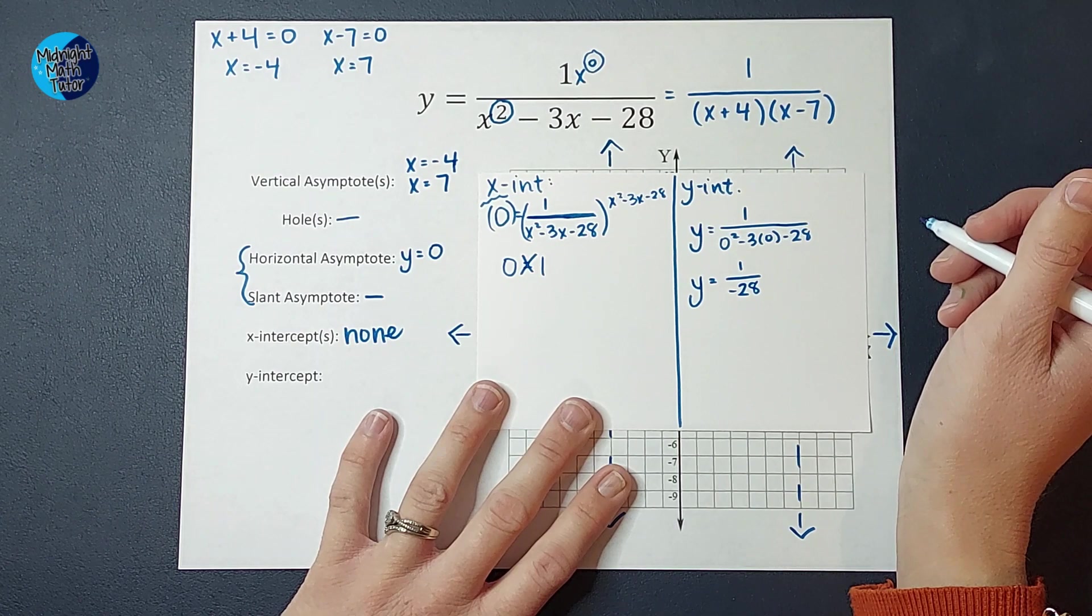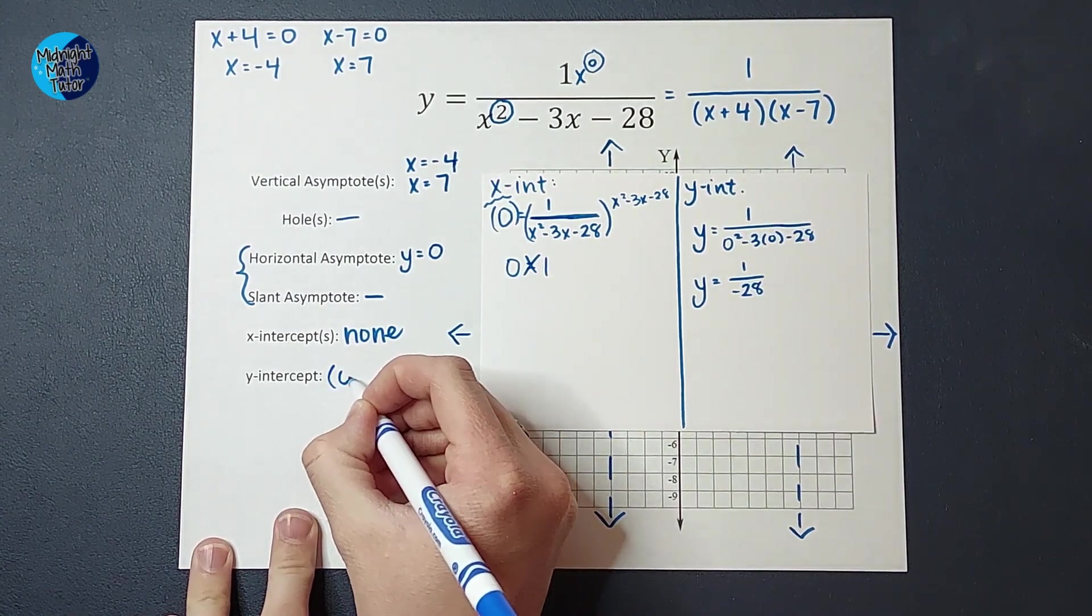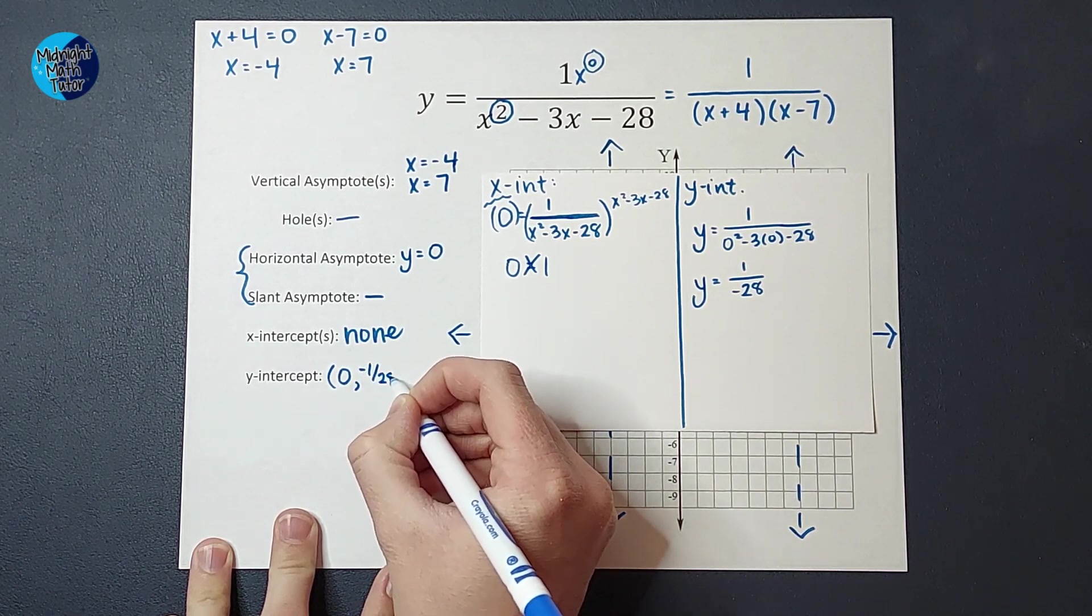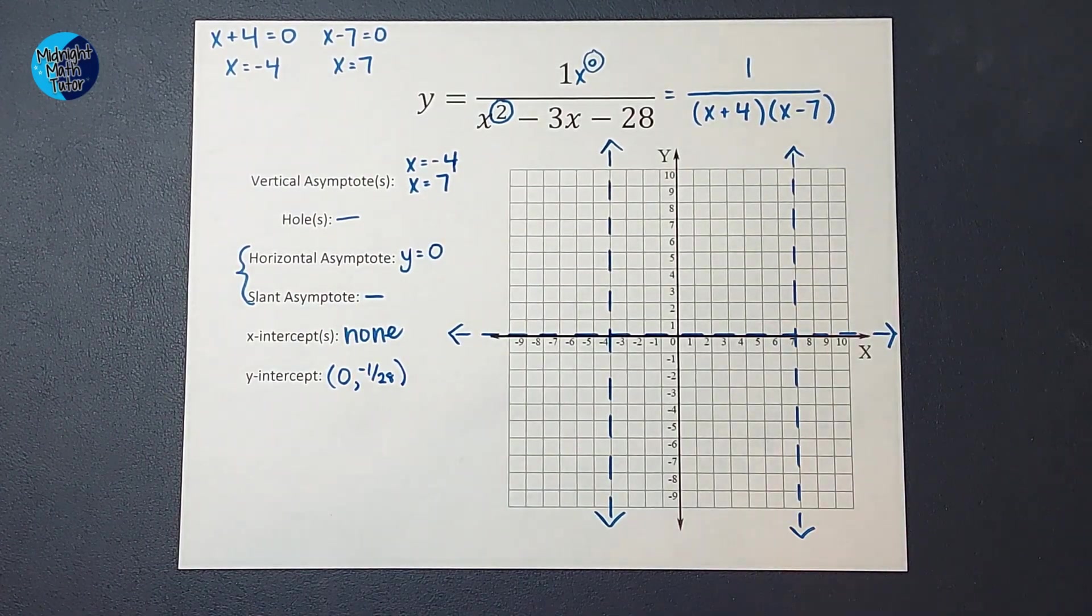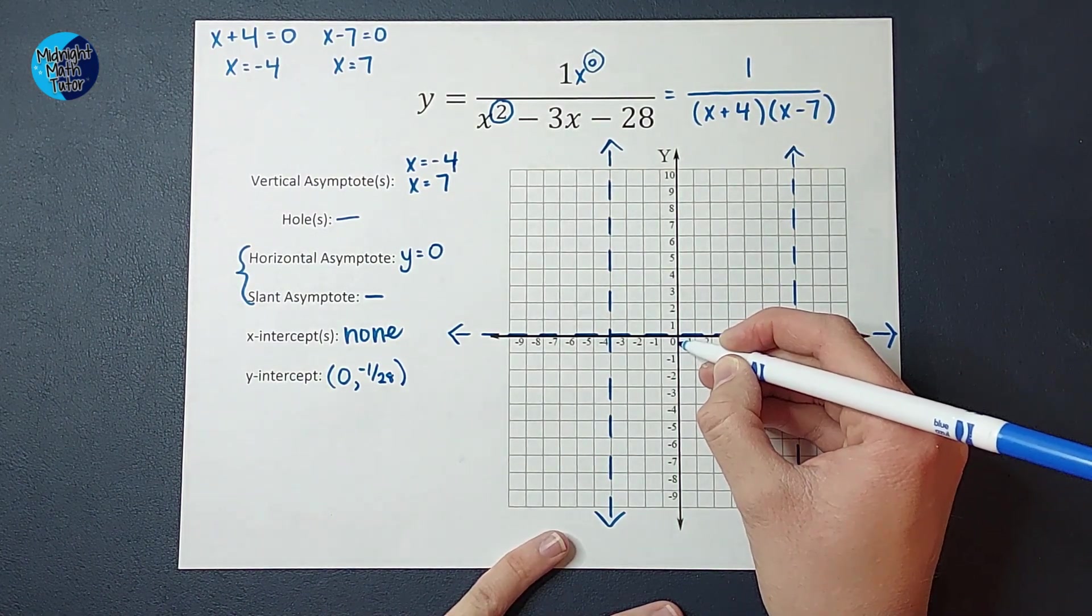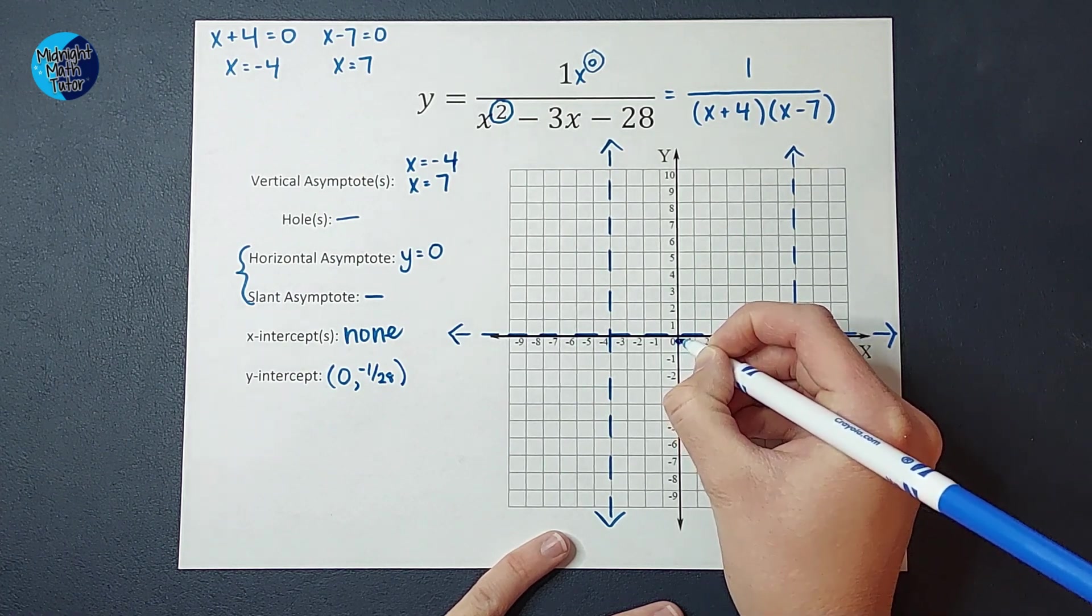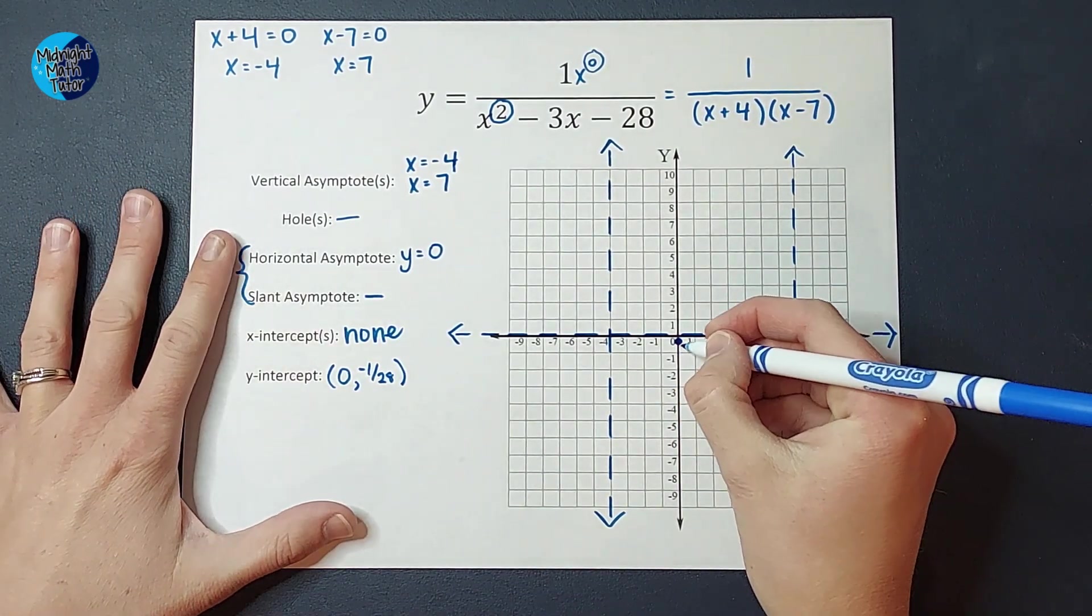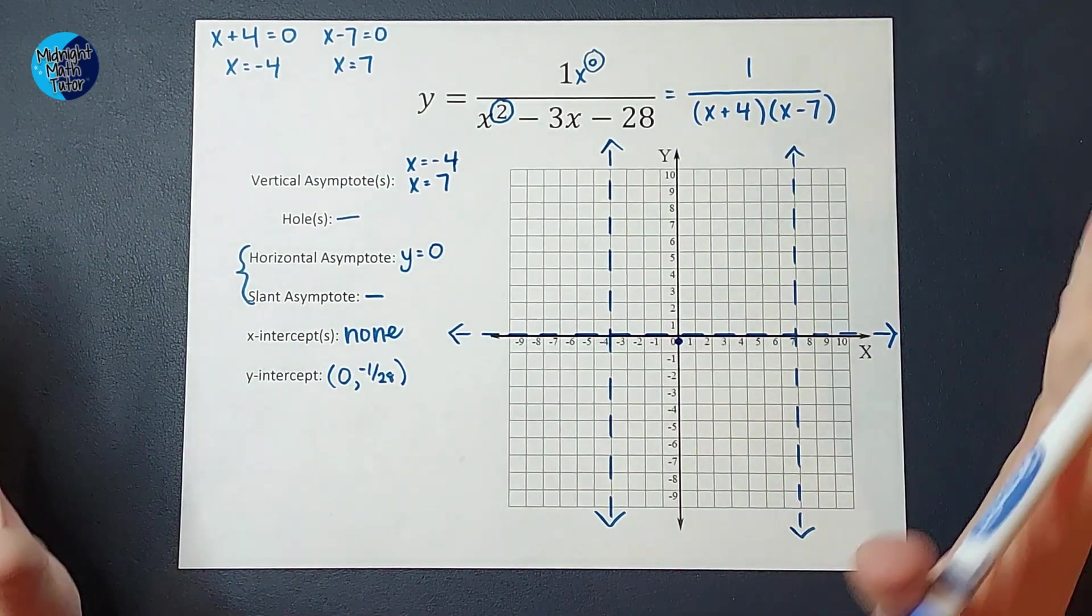Ooh, this looks a little scary. So when I plugged in 0 for x, I got negative 1 28th for y. All right. All that tells me is that my graph will cross the y-axis just barely below 0. It's not going to cross 0, but it's going to be just below 0. Now, keep in mind your graph does not have to be perfect. You don't have to cut this into 28 pieces. Just have it be barely below 0. All right.